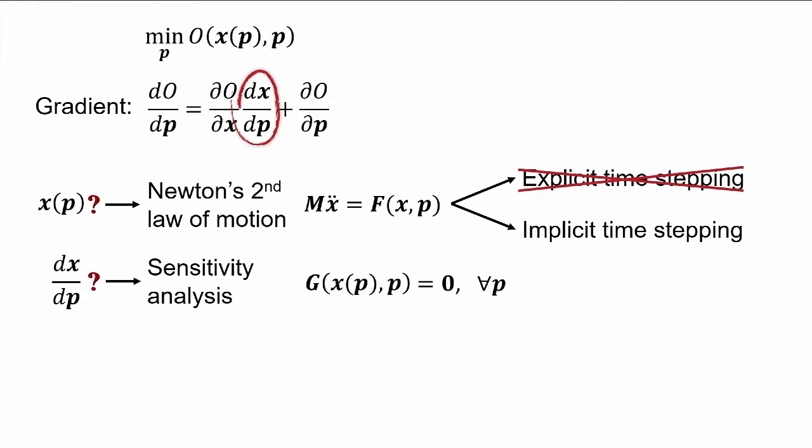We can circumvent this problem by using sensitivity analysis. It leverages the fact that for any P, we can compute the corresponding X, in our case by solving this forward simulation, such that this dependency G equals zero is true. That means the dependency between X and P can be captured by this relation, which corresponds to Newton's second law.